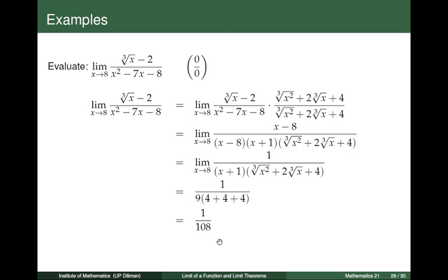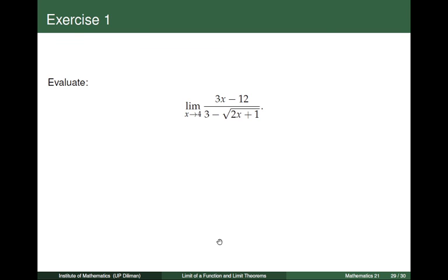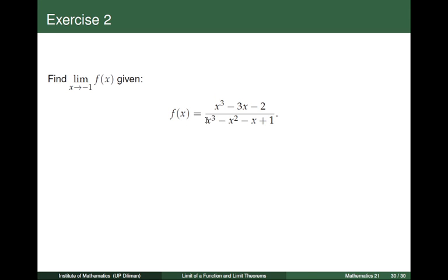This is the last example for this lecture. Let us now move on to the suggested exercise items. For the first exercise, evaluate the limit of 3x minus 12 divided by 3 minus the square root of 2x plus 1 as x tends to 4. For the second exercise, find the limit of the function f as x tends to negative 1, where f is given by x cubed minus 3x minus 2 divided by x cubed minus x squared minus x plus 1.